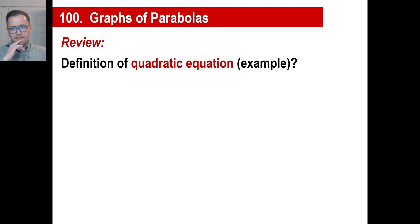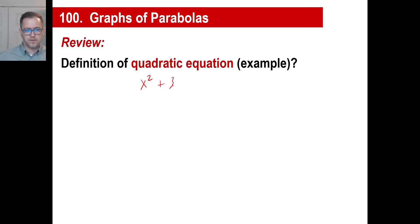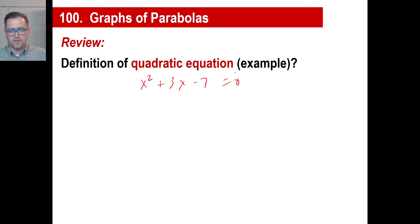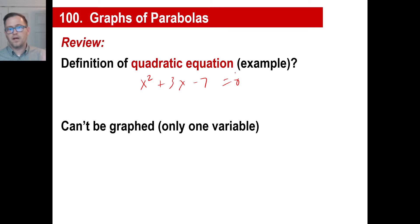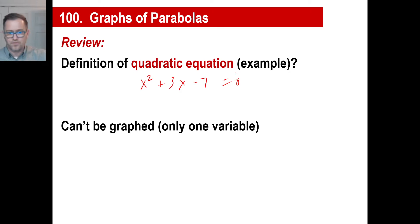Let's look back at the definition of a quadratic equation. If you recall, it looks like this: x squared plus 3x minus 7 equals 0, or whatever. It's just one variable, and it has degree 2. You can't graph this because it has one variable. Like we've done things before, we had an x and a y where you can graph a line — you put something in for x, get something for y, and there's your point. You graph all those points together and there's your line.